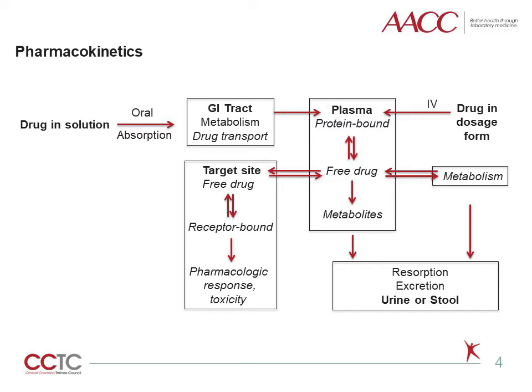Many drugs bind to one or more plasma proteins, mostly albumin, globulins such as alpha-1 acid glycoprotein, and lipoproteins. In general, acidic drugs associate primarily with albumin, while basic drugs bind globulins and lipoproteins. There is an equilibrium between the amount of drug that is protein-bound and free drug, which means non-bound to protein. Free drug is more readily accessible to cell membranes, drug receptors, and elimination mechanisms. So the free fraction is considered the active component of the drug responsible for its biological effects.